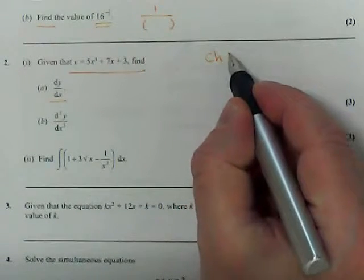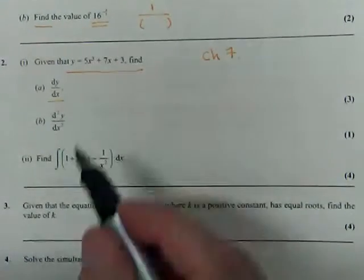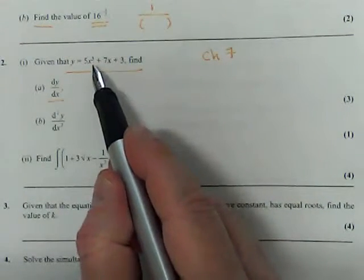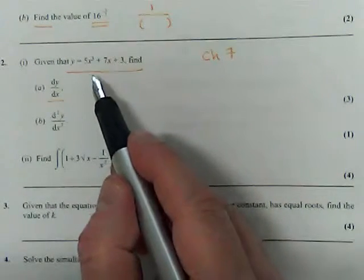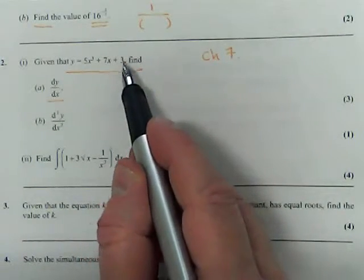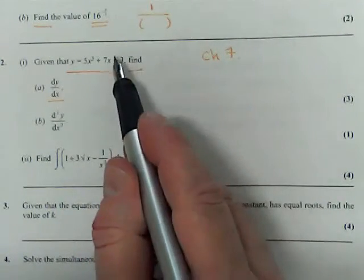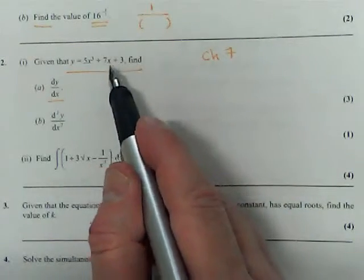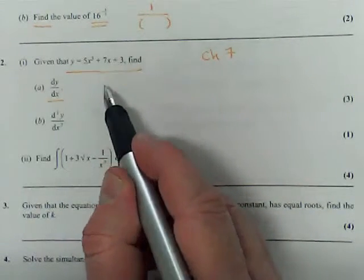This is chapter seven, if you need to look that up. But we take each power, and we reduce it by one, and we multiply by the old power. And then you should know that when you differentiate a constant, it vanishes, and when you differentiate a number of x's, you just get that number.